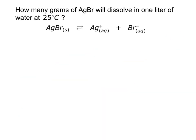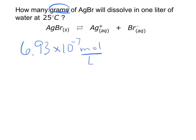The next part says: how many grams of AgBr will dissolve in 1 liter of water at 25 degrees? My answer from before was 6.93 times 10 to the negative 7 moles per liter. Now I'm looking for grams per liter, so this is a simple factor label problem — converting moles to grams. Moles always gets the 1, grams always gets the periodic table, so I need to look up AgBr off the periodic table.